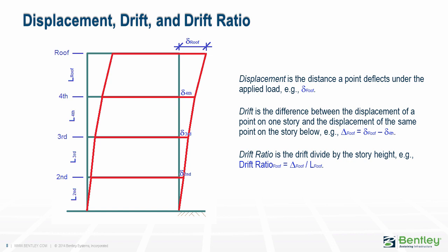A brief overview. Displacement is the distance a point deflects under the applied load. Drift is the difference between the displacement of a point on one story and the displacement of the same point on the story below. And drift ratio is the drift divided by the story height. Displacement and drift are often used interchangeably in casual conversation, but they are in fact different. Three feet of displacement may or may not be a problem, but three feet of drift between adjacent stories would be catastrophic.